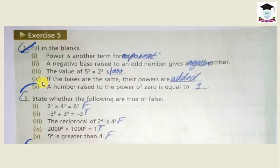Fill in the blank number 4: if the bases are the same, their powers are ___. When the bases are the same, their powers must be added. Fifth fill in the blank: a number raised to the power of 0 is equal to ___. When any number has a power equal to 0, it is equal to 1.